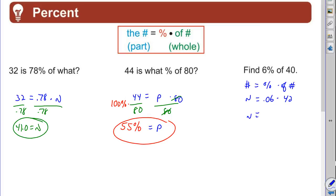.06 times—I think that's supposed to be a 40. Ugly 40. 0.06 times 40. And we've got 2.4. 2.4.